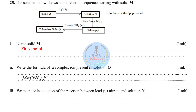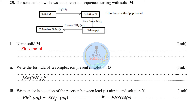Write an ionic equation for the reaction between lead(II) nitrate and solution N (zinc sulfate). Double displacement occurs — Pb²⁺ and Zn²⁺ switch partners. The ionic equation: Pb²⁺(aq) + SO₄²⁻(aq) → PbSO₄(s) — lead(II) ions react with sulfate ions to form insoluble lead(II) sulfate. This brings us to the end of this revision session.